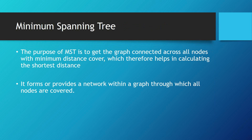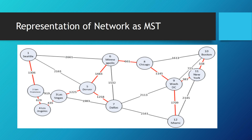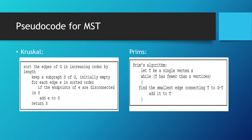Now we jump into the minimum spanning tree. The purpose of a minimum spanning tree is to get the graph connected across the minimum distance covered, which helps in calculating the shortest distance. It provides a network within a graph through which all nodes are covered. In a graph there can be n numbers of spanning trees, but there is only one minimum spanning tree. This example starts from Seattle to San Francisco, then Los Angeles, Las Vegas, Denver, and covers Minneapolis, Dallas, Chicago, Washington DC, and so on. There are two ways to calculate it: Kruskal's algorithm and Prim's algorithm — they work in different formats but give the same result.